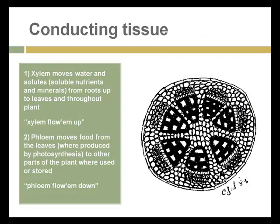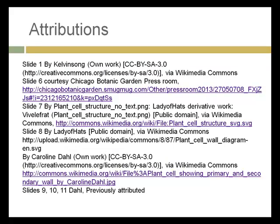Conducting tissues are the pipes that move water and materials from roots up to leaves and throughout the plant. There are two important types: xylem, which moves water and nutrients up the plant, and phloem, which moves food from the leaves where it's produced to other parts of the plant where it'll be used or stored for the long-term survival of the plant. That's it for the first of three lectures — review the book, try to get a handle on some of these terms, and I'll be back with you shortly.